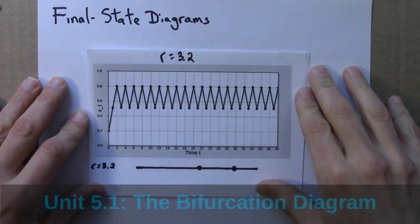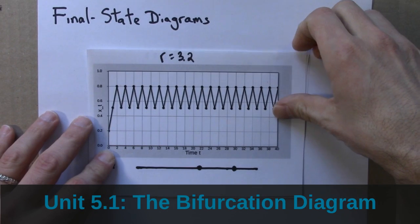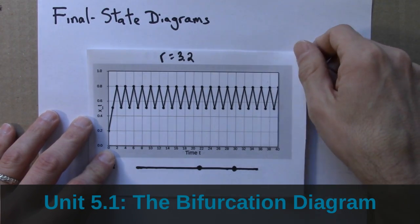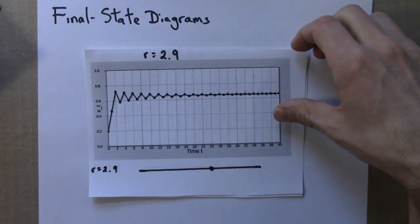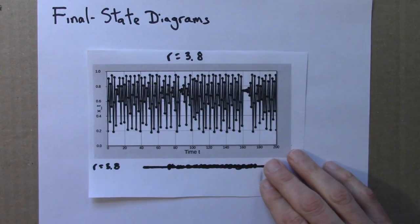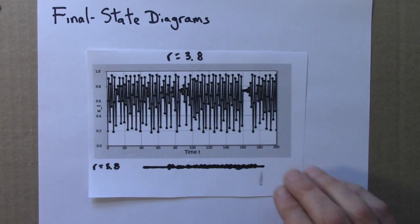So we now have a collection of finite state diagrams. They're the examples that I did in the last video: 3.2, 2.9, and then an aperiodic value at 3.8.